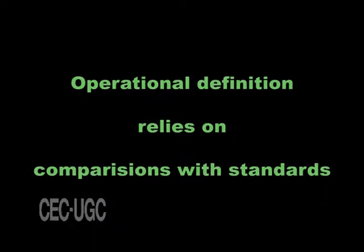Measurements demand the use of operational definitions of relevant quantities—that is, a scientific quantity is described or defined by how it is measured, as opposed to some more vague, inexact or idealized definition. For example, electrical current measured in amperes may be operationally defined in terms of the mass of silver deposited in a certain time on an electrode in an electrochemical device. The operational definition of a thing often relies on comparisons with standards. The operational definition of mass ultimately relies on the use of an artifact such as a certain kilogram of platinum-iridium kept in a laboratory.